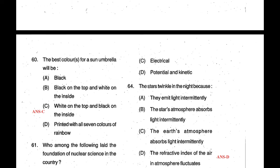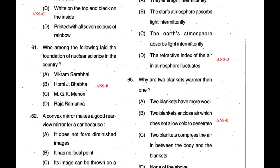White color reflects most of the sun's rays, and black color absorbs them. If the top is white then it absorbs less heat — that's why the umbrella top is white and black inside. Question 61: Who among the following led the foundation of nuclear science in the country? You know that Homi J. Bhabha — the Bhabha Atomic Research Centre is in Mumbai — answer is B.